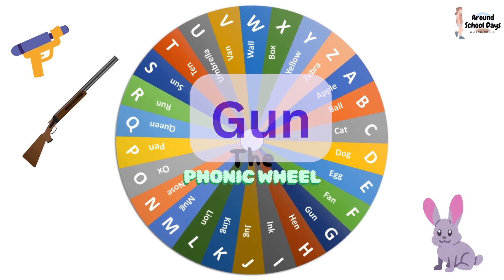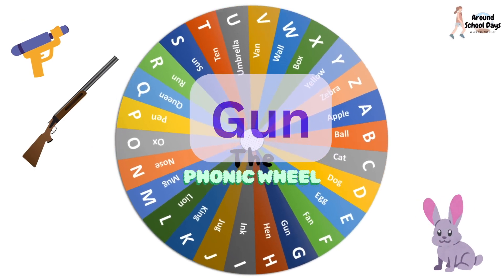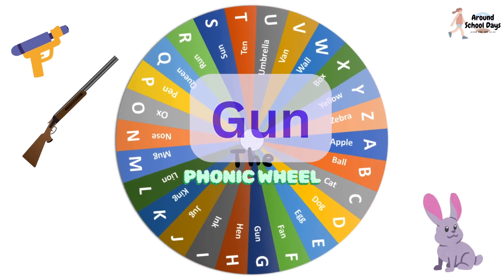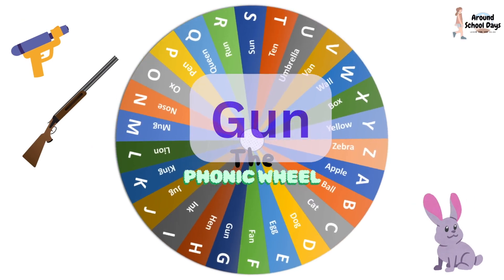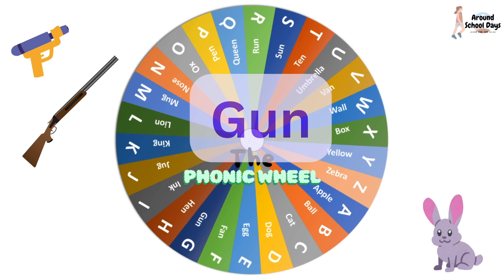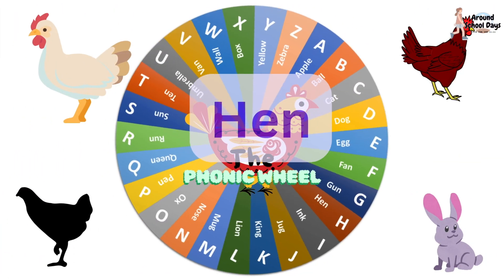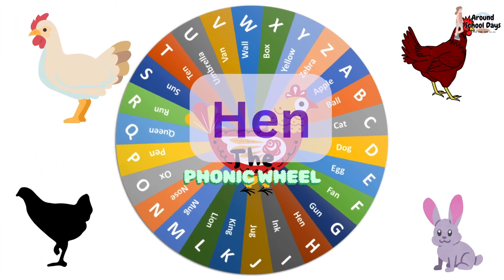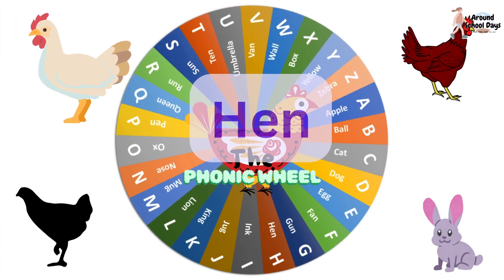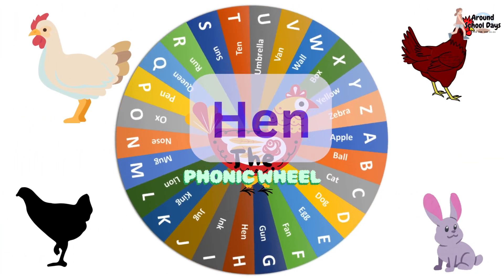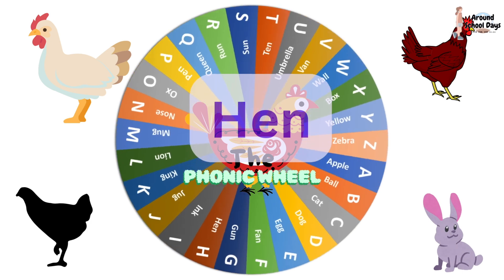G says G, as in gun. H says H, as in hen.